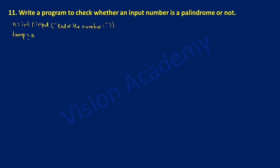After manipulation the value will get changed, hence it has to be kept in a separate variable so that at the end we can compare the reversed number with the original number. Now let us take another variable called rev, that is reverse, and equate it with value 0. We equate it to 0 because whenever we declare any variable it will occupy certain memory space pointing to a location that could contain any previously executed value, which is not required for this program, hence we reset it to 0.